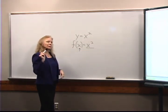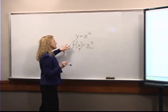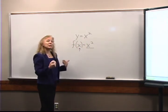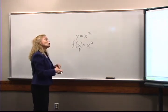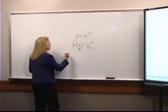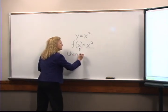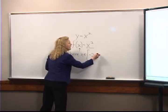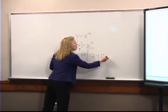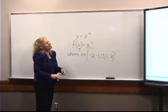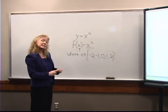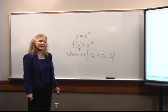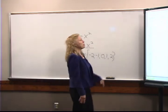Now if you wanted to be really accurate, this equation — somebody might misinterpret and think that I have infinite possibilities to put in for x. So I could include where x is an element of the set {-2, -1, 0, 1, 2}. That's simply one way I can show I have a finite number of ordered pairs in my set.